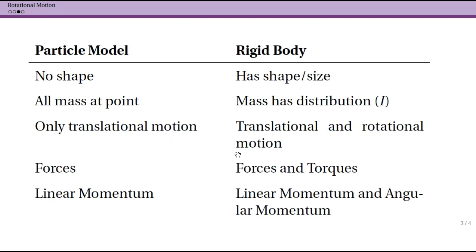For the particle model, we dealt with forces. We still have forces for rigid body, but we're also going to have a new quantity called torques. Torques occur when forces act on specific positions on our object and our object can rotate. So again, torque doesn't have any meaning when you have a particle model.